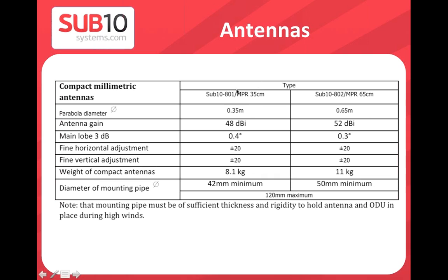Two antenna options: 35 cm with 48 dBi gain, and 65 cm with 52 dBi gain. Both are ETSI Class 2 with ETSI Class 3 equipment available. The 65 cm antenna weighs 80 kg versus 11 kg for the 35 cm. Be careful with large antennas on small masts — a 65 cm dish on a 42 mm mast can vibrate significantly in windy conditions, affecting link availability.